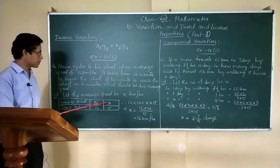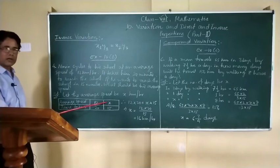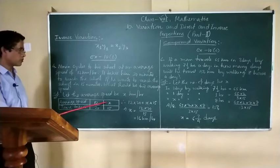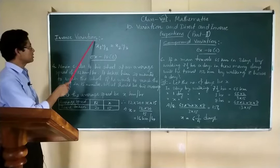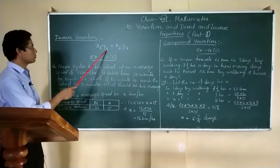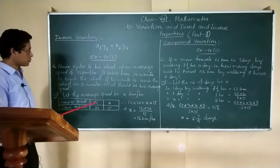If he wants to reach the school in 15 minutes, at what speed should he ride his bicycle? That we don't know, we have taken it as x. As we have seen, in case of inverse variation, it is x1 into y1.